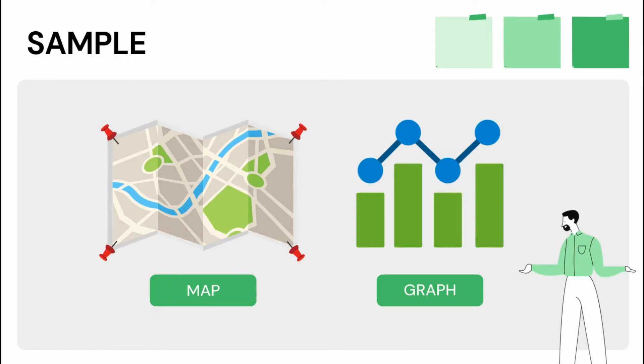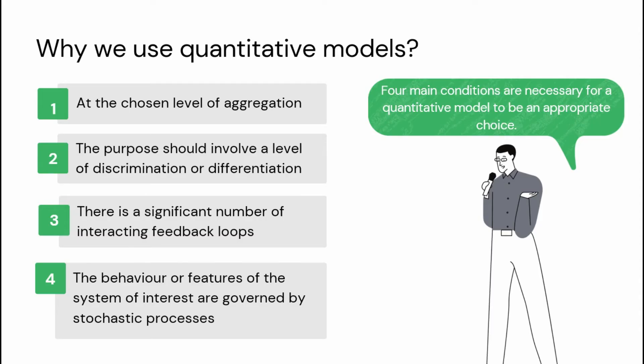Why do we use quantitative models? Why do we need to quantify things? Four main conditions are necessary for a quantitative model to be an appropriate choice. Number one, at the chosen level of aggregation, all the significant features or behaviors of the system must be adequately quantified.